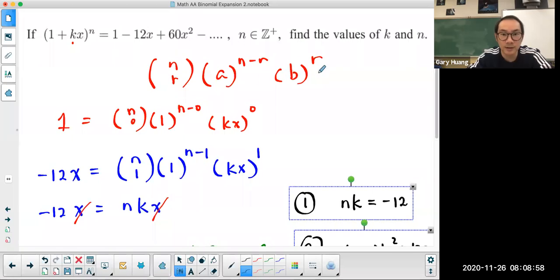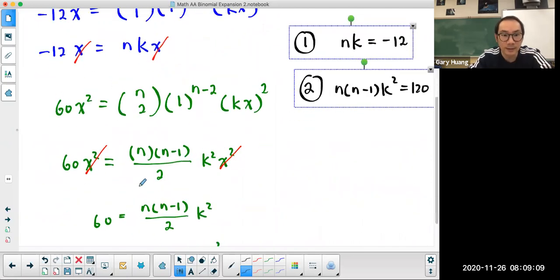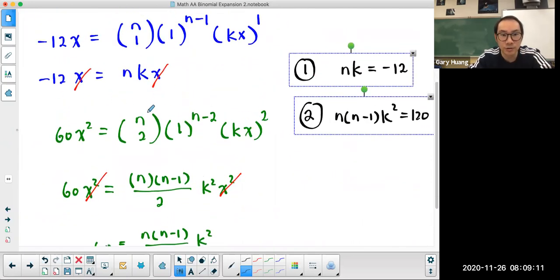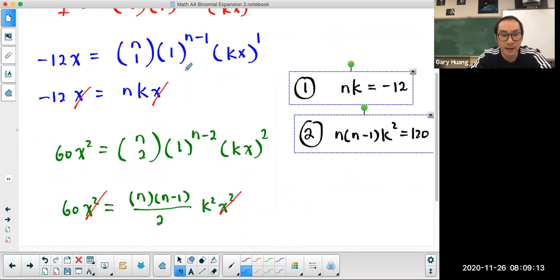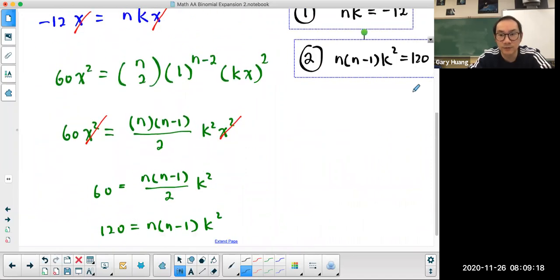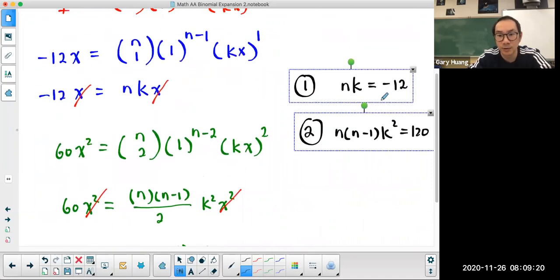The key here is understanding how to use the binomial theorem. Understanding the first term is n choose 0, second term is n choose 1, and the third term is n choose 2. Setting them up and figure out the coefficients must equal to each other so that you have two equations and two unknowns.